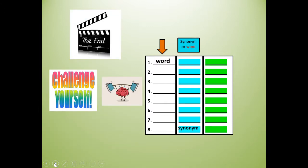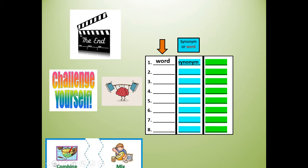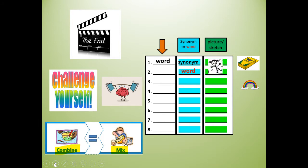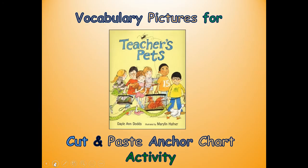Now we're at the end of our lesson — it's time to challenge yourself. Make sure you've written a word for numbers one through eight, a synonym for each — remember a synonym is a word that is similar or the same, just like 'combine' is the same as 'mix.' If you didn't catch the synonym, that's okay — you can rainbow write your word again. Then draw a picture or sketch for each word. Thank you boys and girls for doing this lesson with me, and have a great day!